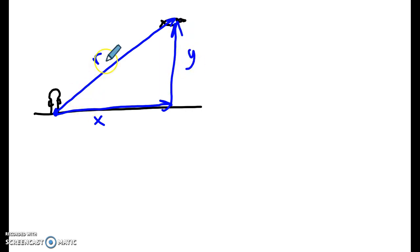And the angle, what angle does R point along? R is pointing along this angle theta. It's pointing up from x, and the number of degrees up that it points is the number for theta.